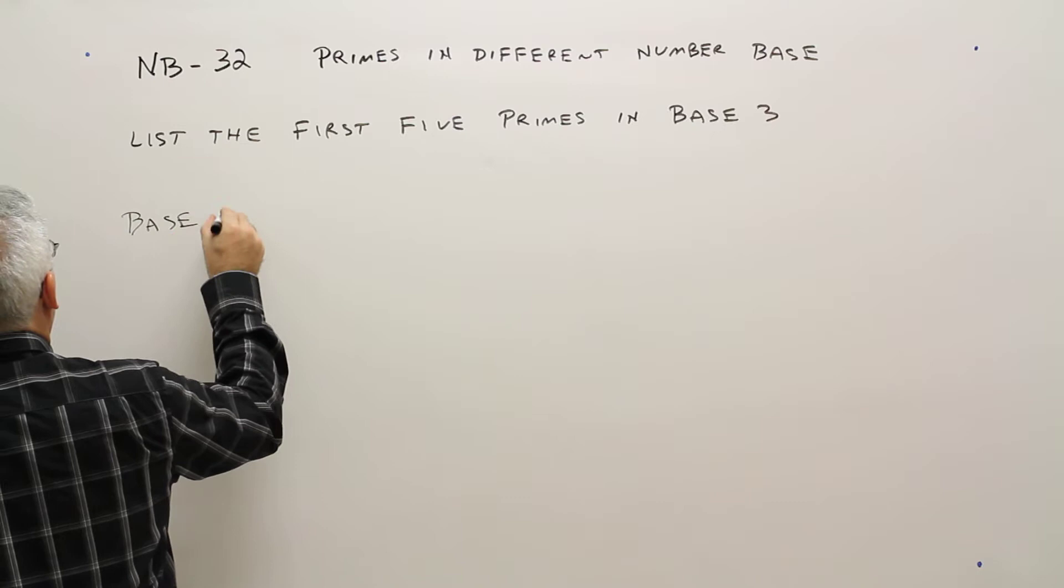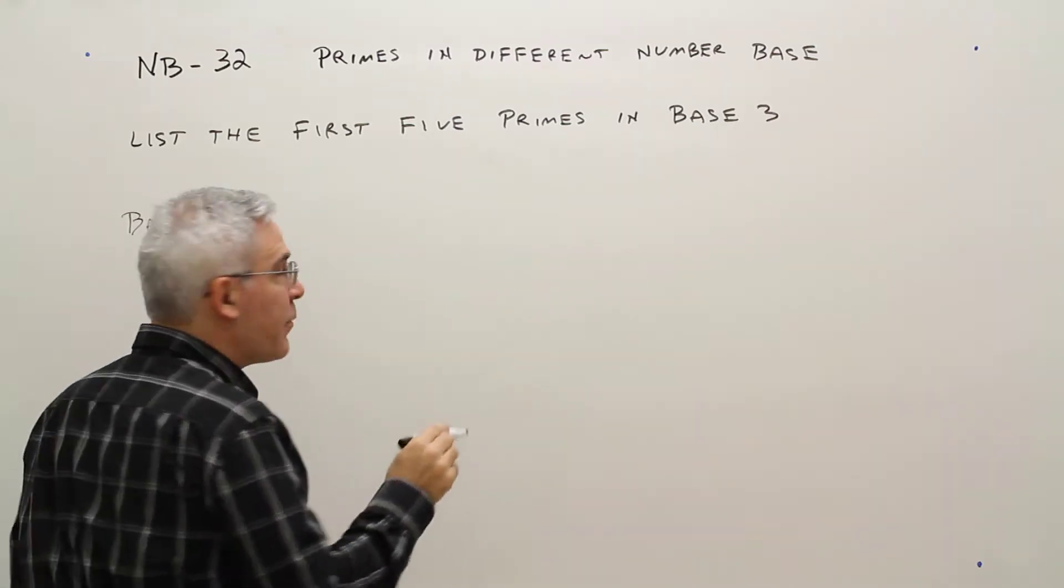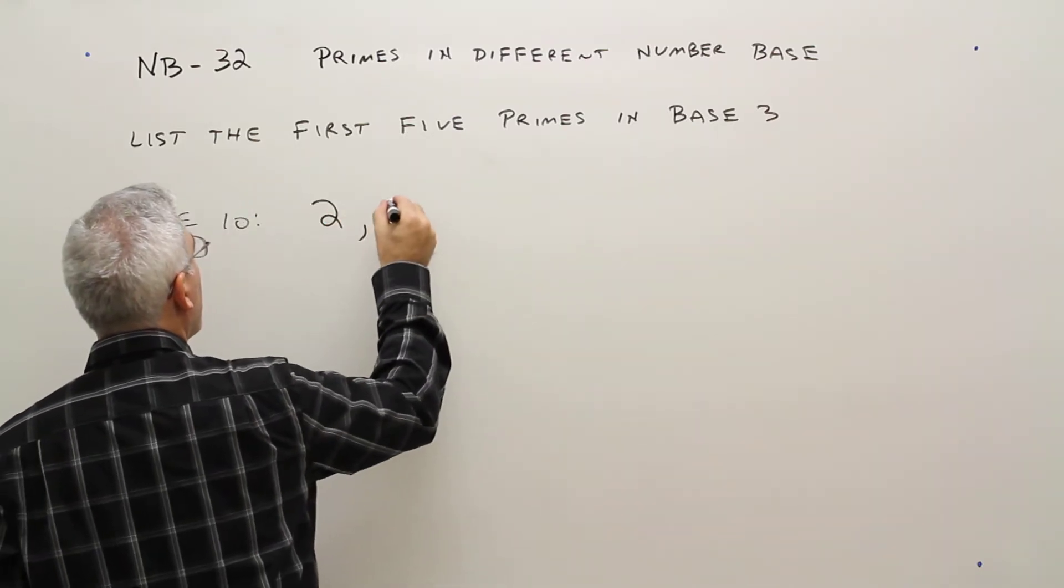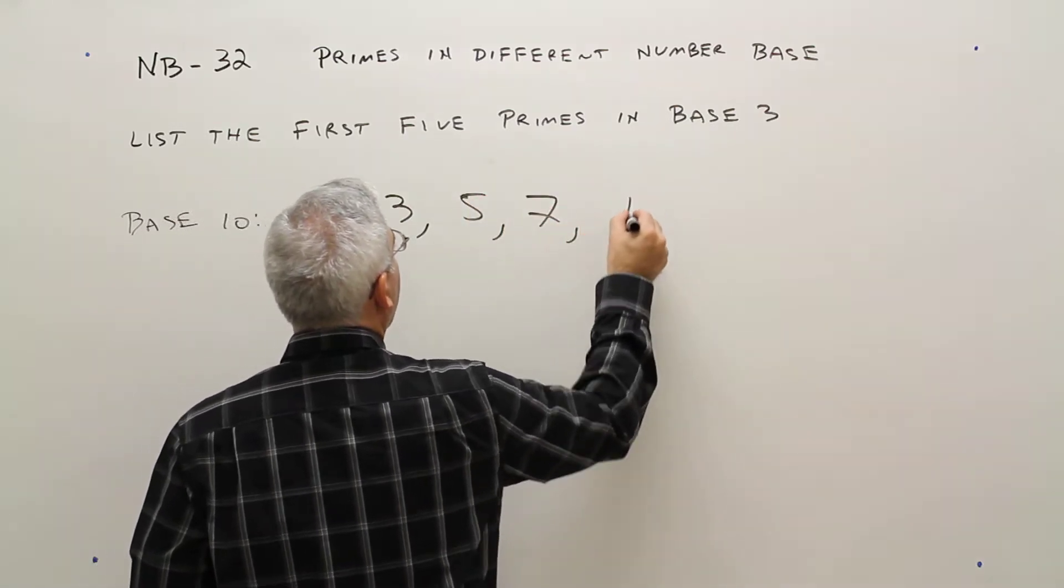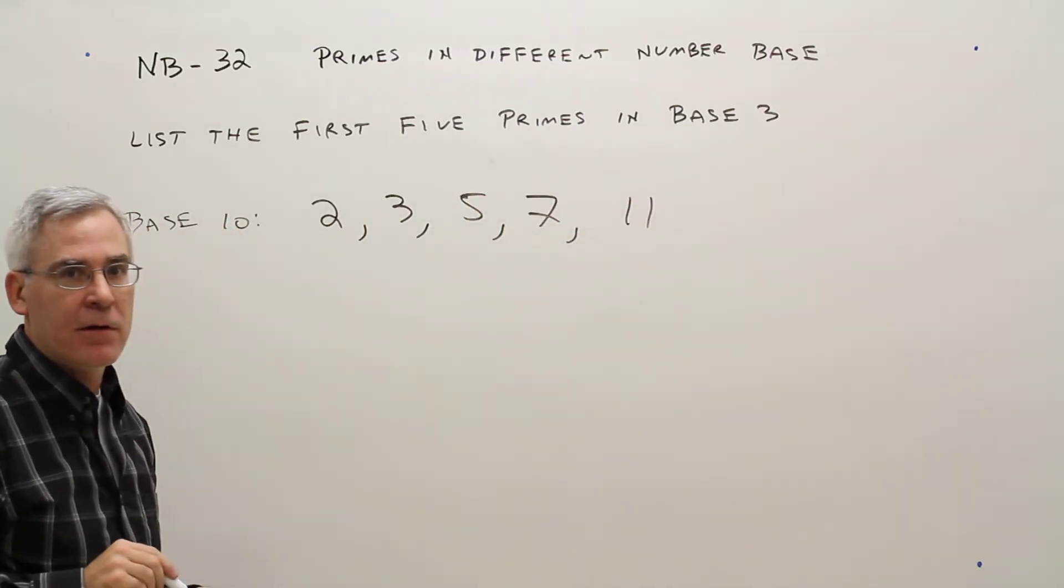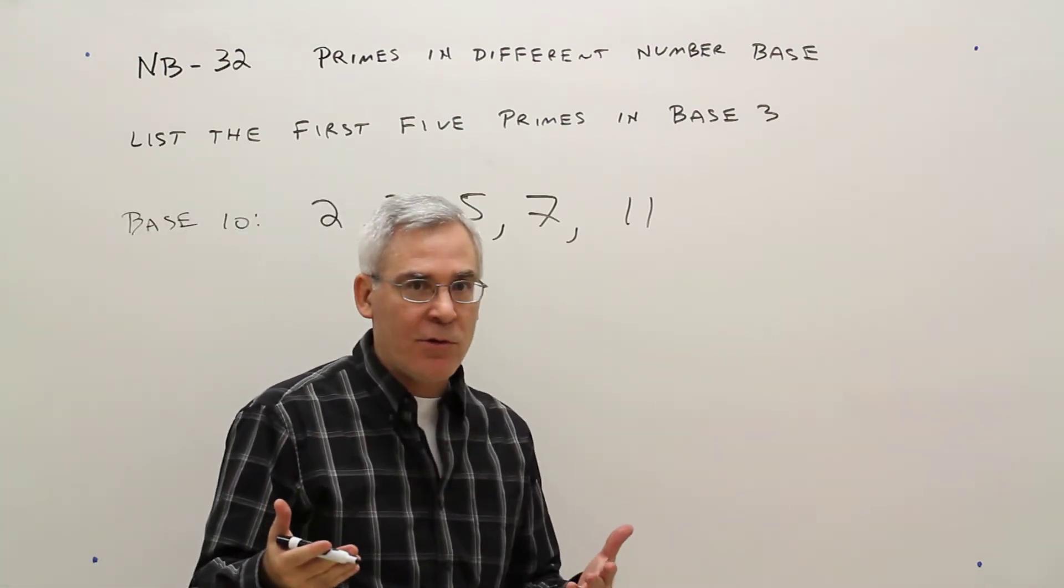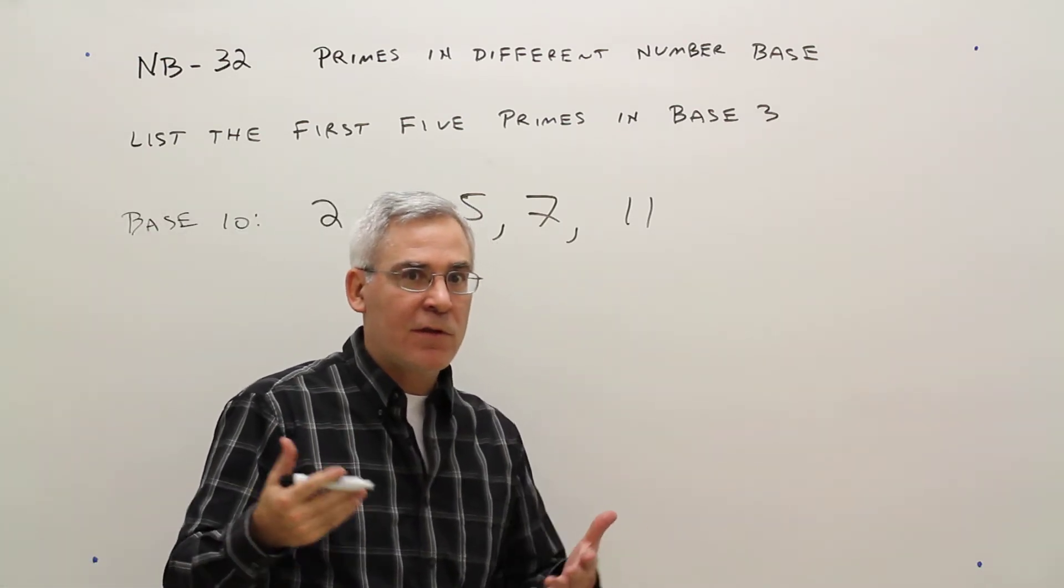My primes are 2, 3, 5, 7, and 11. So now all I'm going to do is convert those to base 3.